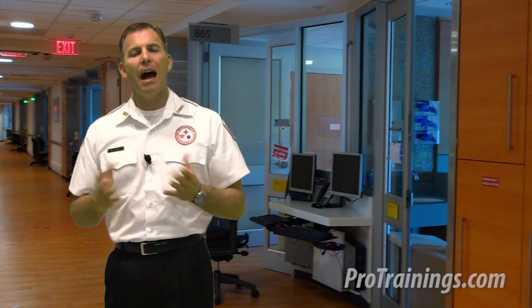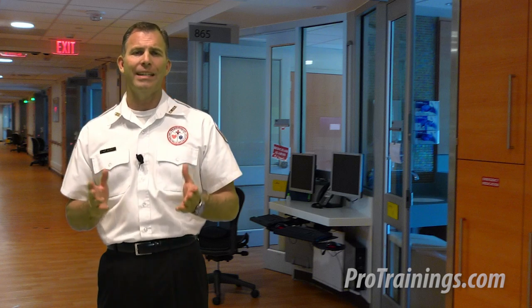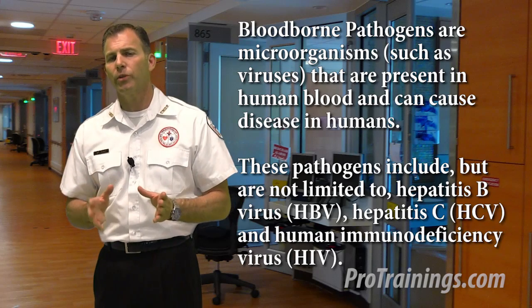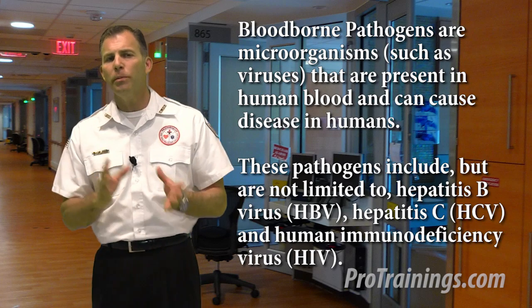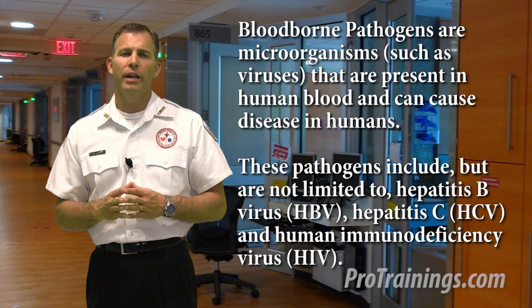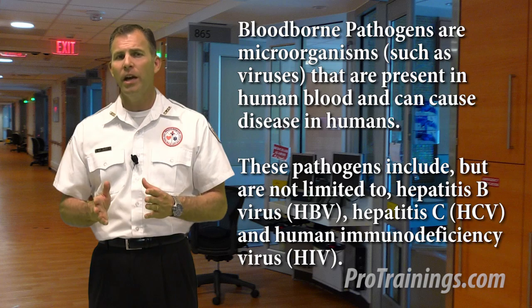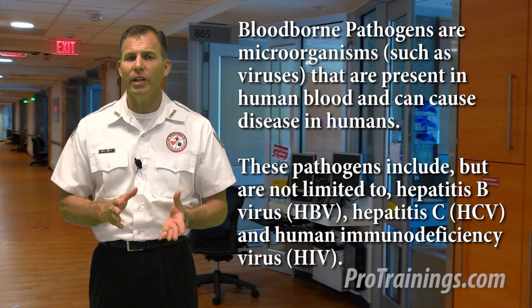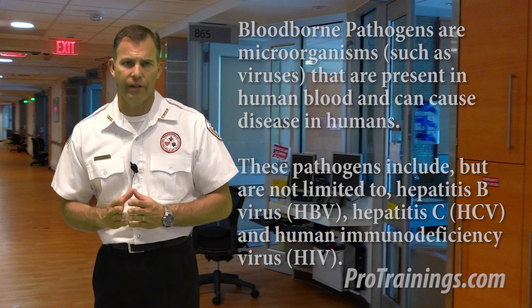You might be asking yourself, how are blood-borne pathogens and infectious diseases spread? First, let's look at what a blood-borne pathogen is. It's a microorganism, such as a virus, that is present in human blood and can cause disease in humans. These pathogens include, but aren't limited to, hepatitis B, hepatitis C, and human immunodeficiency virus, otherwise known as HIV.